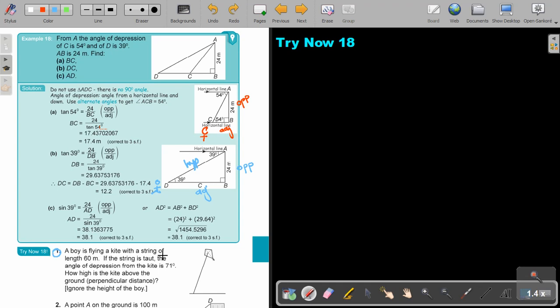A boy is flying a kite with a string of length 60 meters. So always fill it in. That string. If the string is taught, the angle of depression from the kite, and that is going to be 71. Now, always remember, I must work with straight lines. So it means that that angle, that angle, depression is 71. But remember, you can bring it down parallel lines, so that angle will also be 71.